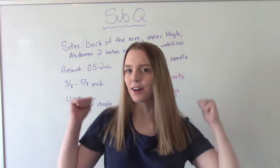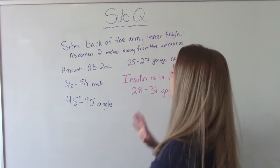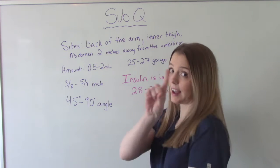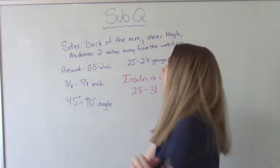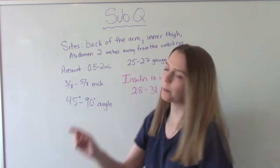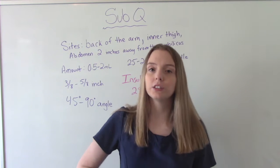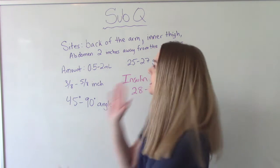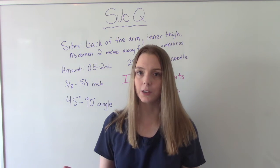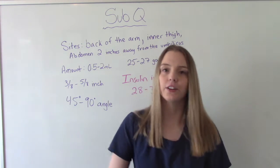So let's talk about the basics, then we'll actually do it. The common sites of administration for this type of injection are the back of the arm — not the deltoid, but the back of the arm — the inner thigh, and the abdomen. If you're going to give it on the abdomen, you want to make sure you're about 2 inches away from the belly button. And if this is something like insulin, where the patient is going to be taught to do it themselves, the easiest places for them to do it are their stomach and their inner thigh.